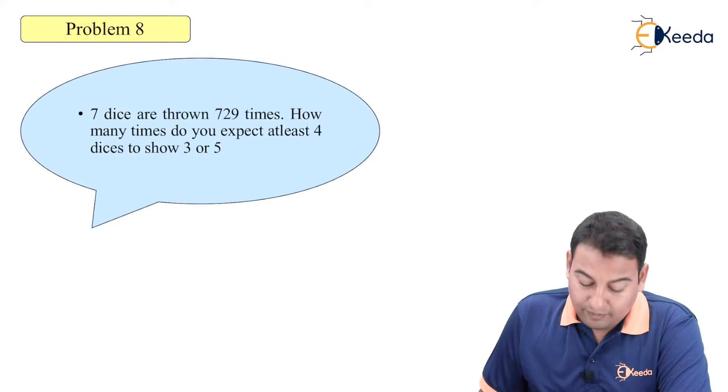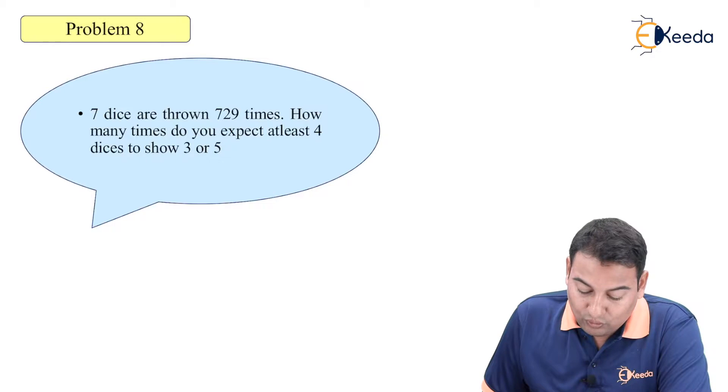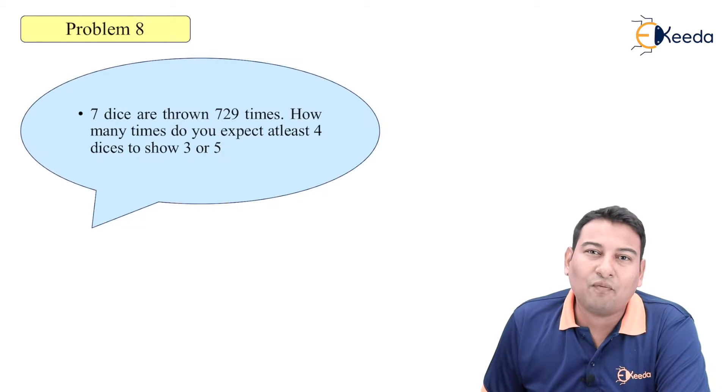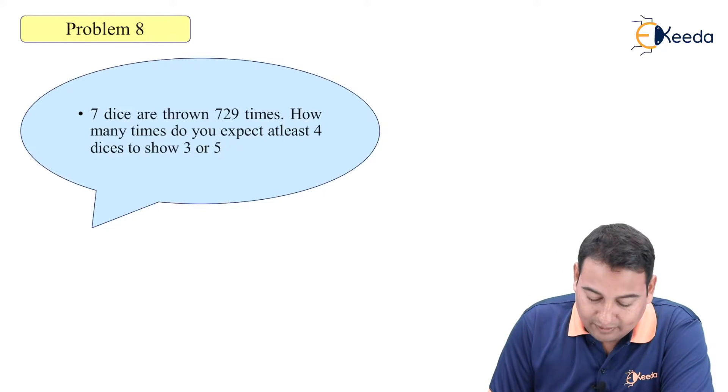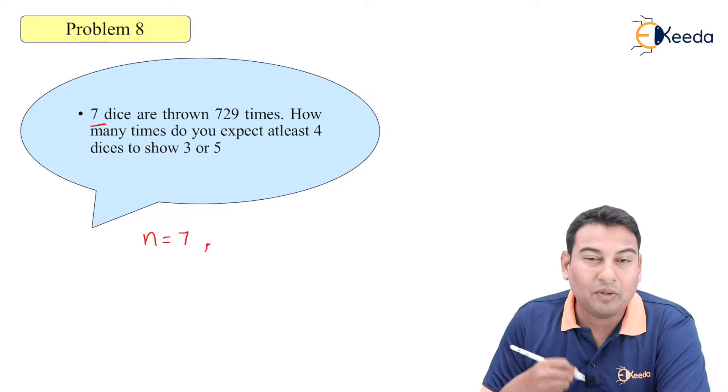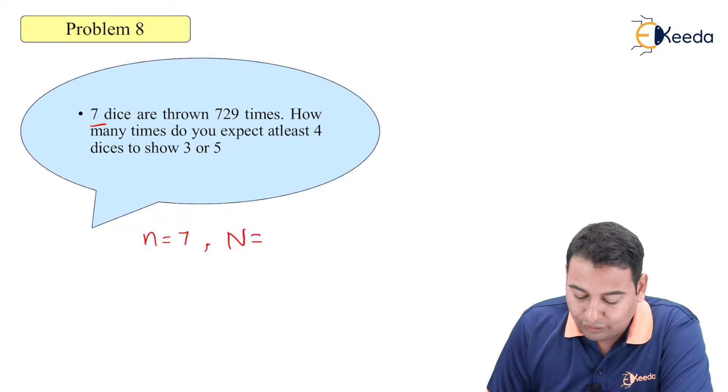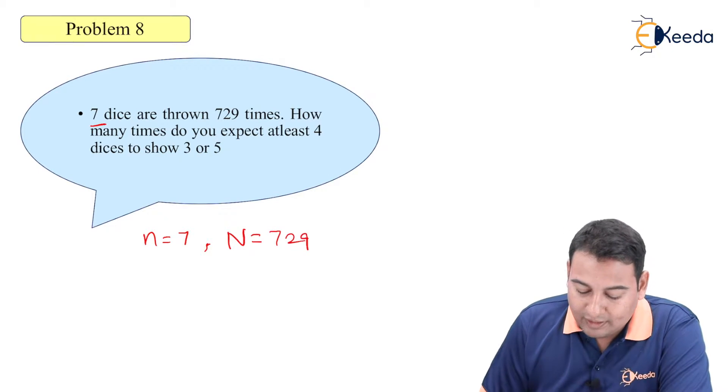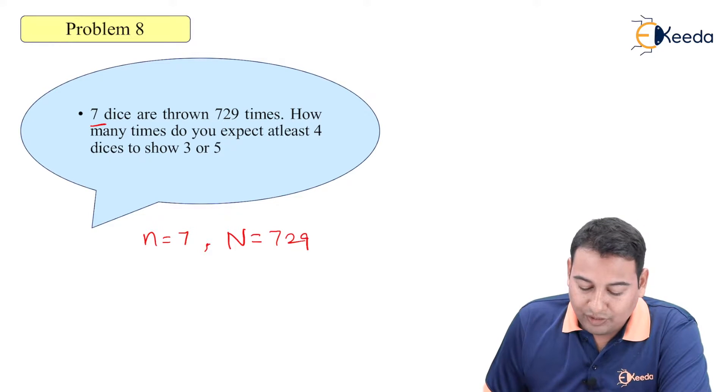Let's have a look at the given problem. Here, seven dice are thrown 729 times. Again, we need to identify what is small n and what is capital N. Seven dice, therefore small n equals 7, and that experiment is repeated 729 times, therefore capital N equals 729. How many times do you expect